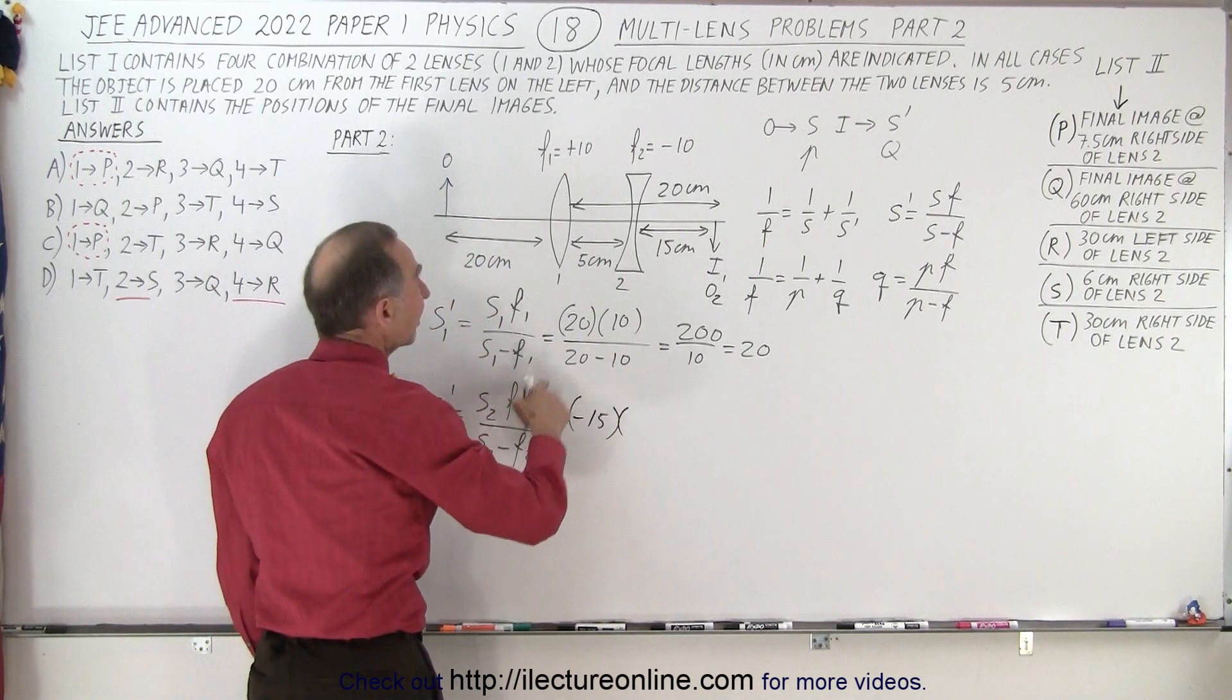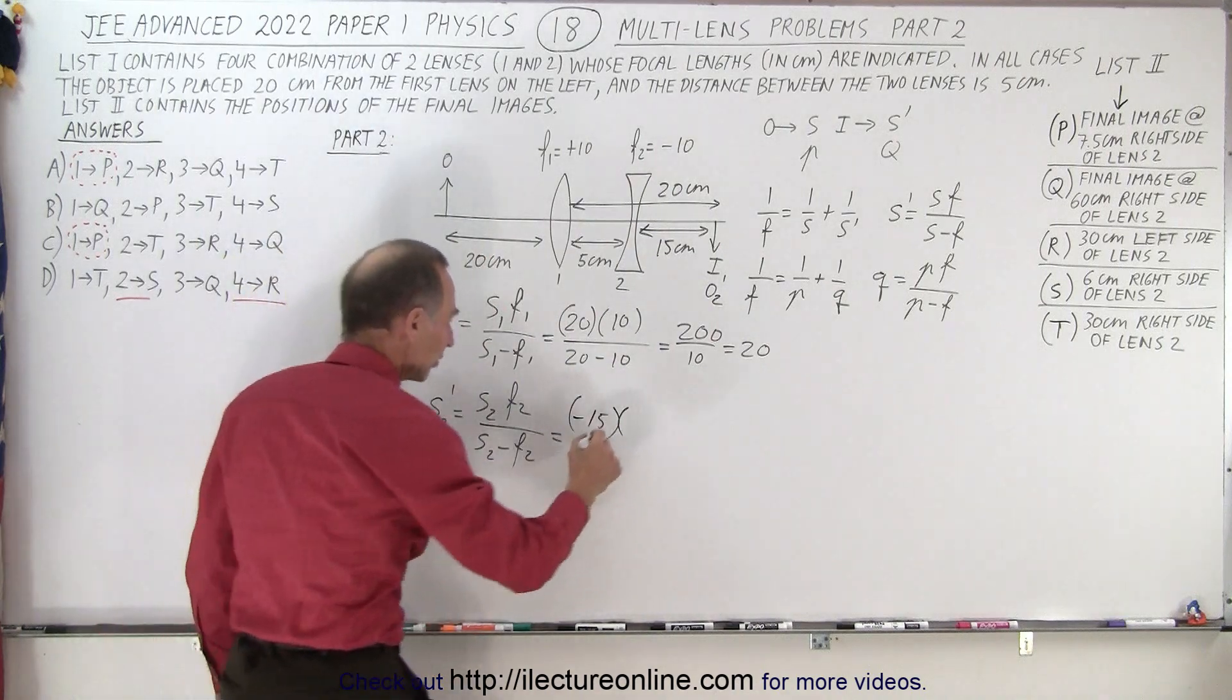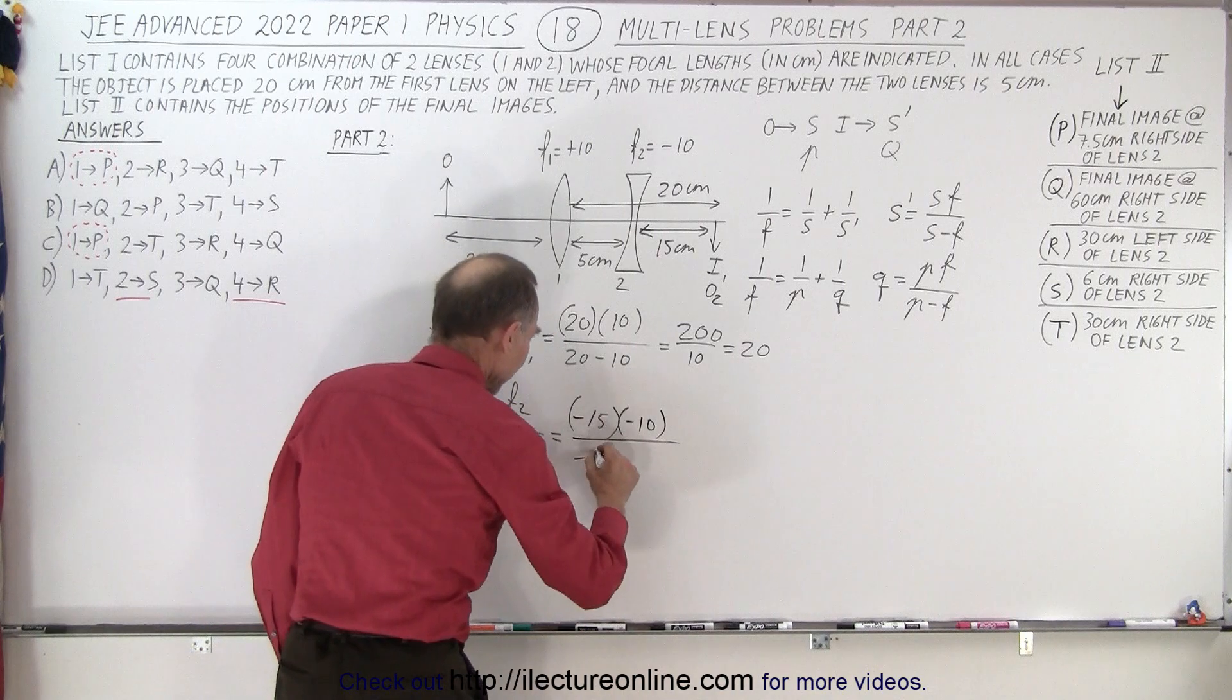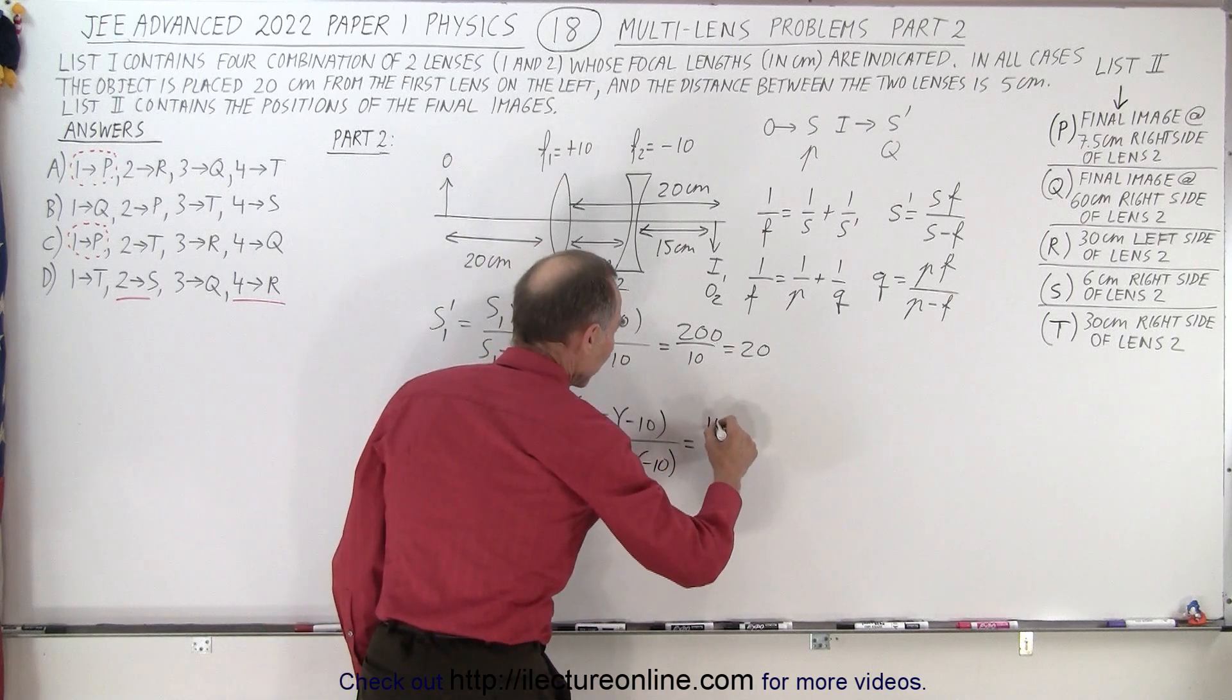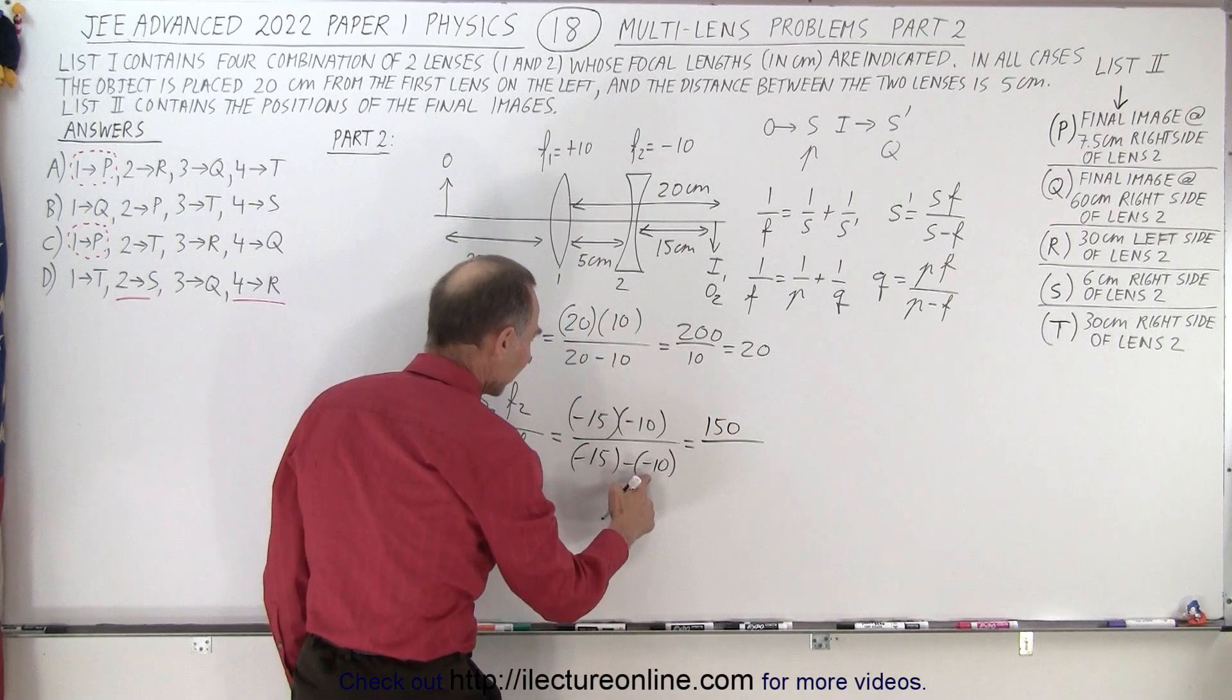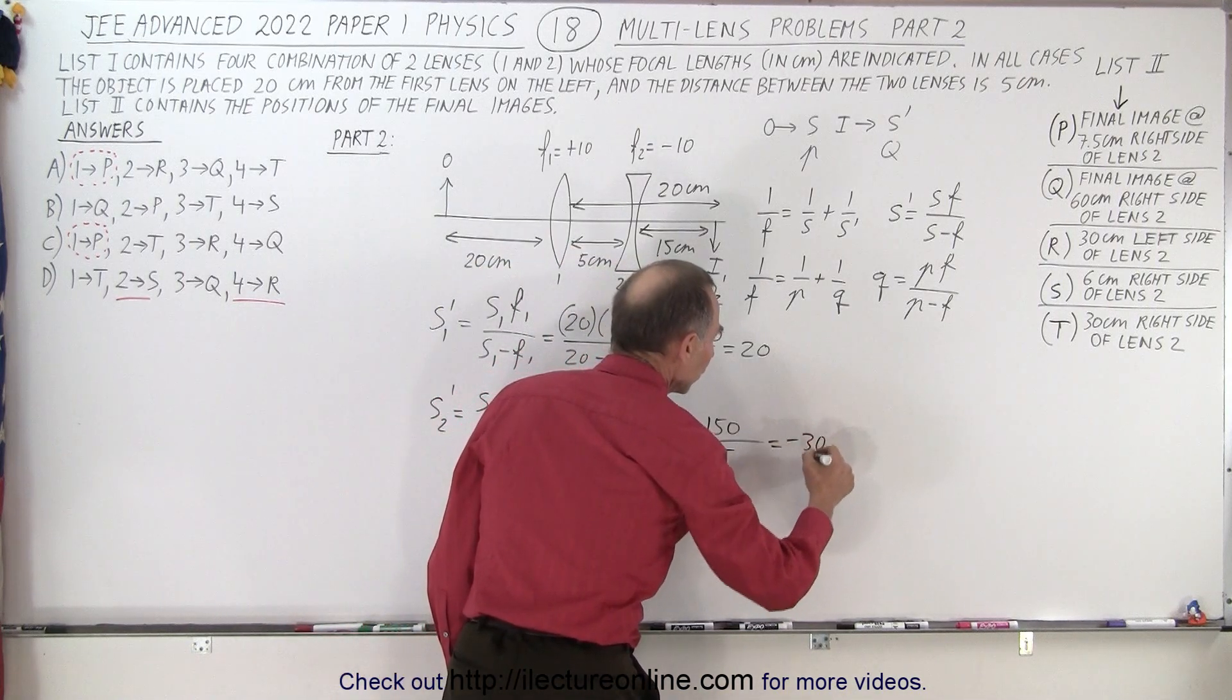Multiply times the focal length of the second lens. Now since it's a diverging lens it's a negative focal length. That's minus 10 divided by S2 which is minus 15 minus a minus 10. So it gives us a positive 150 divided by minus 15 minus minus that's a plus 10. That's minus 5 which is equal to a minus 30.